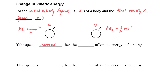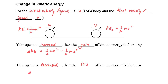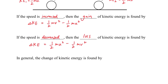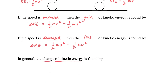If the speed is increased, then the object will gain kinetic energy. So the delta KE will be one-half mv² minus one-half mu². Similarly, if the speed decreases, then a loss of kinetic energy can be observed, and the delta KE is just the larger one minus the smaller one.